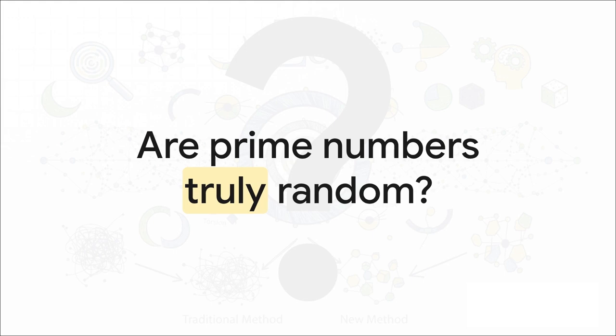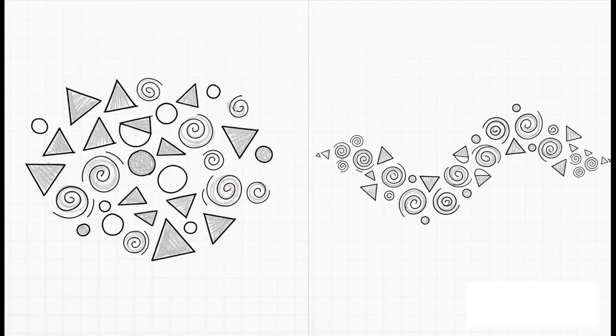To really get this, we have to start with a question that has bugged mathematicians for centuries. When you look at the prime numbers—two, three, five, seven, eleven, and on and on—they seem to pop up without any discernible pattern. It just looks like chaos. But is that really what's going on, or could it be that what looks like chaos is actually something else entirely? A deep hidden structure, a secret rhythm that, if we could just figure out how to listen, would explain everything about the primes.